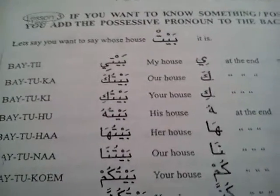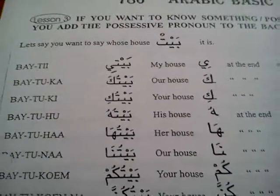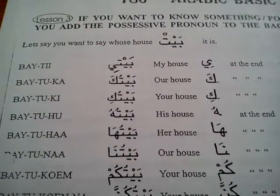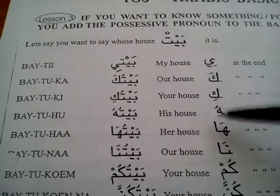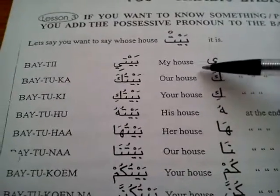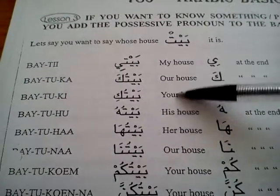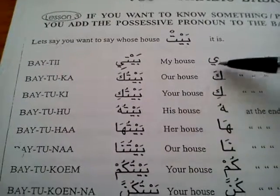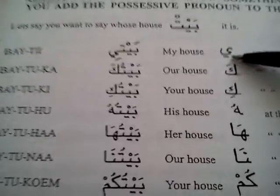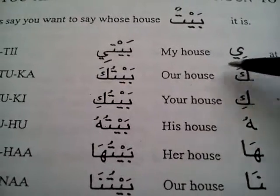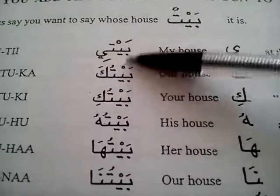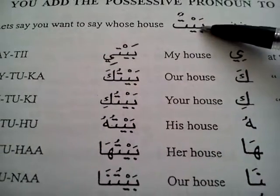All right, lesson three. If you want to use the possessive case in Arabic, and you want to say my house or our house or your house, then we add a letter to the back. So if you use the word bait,